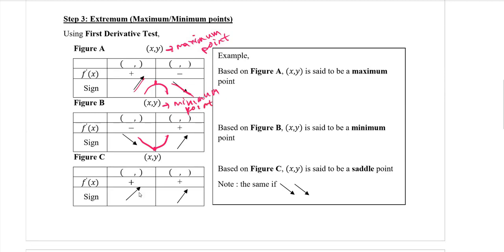For a saddle point, let's say for figure C, we have the same direction. For example, from negative infinity to 2 and then 2 to 5, let's say the coordinate is (2, 1). That means (2, 1) is actually a saddle point — it is neither a minimum nor maximum point, because it has the same sign, meaning going up then up, or going down then down. That means it is a saddle point.